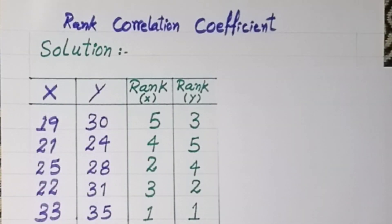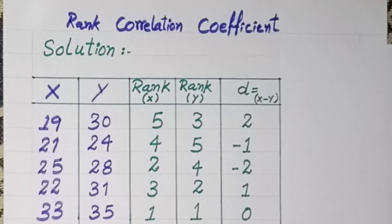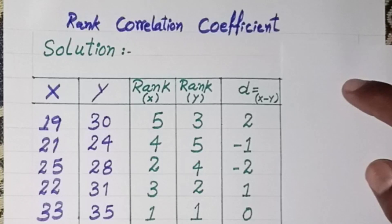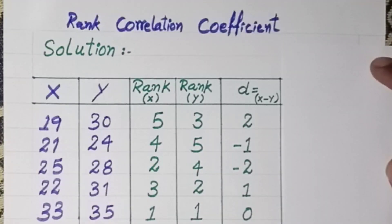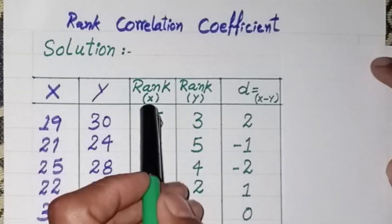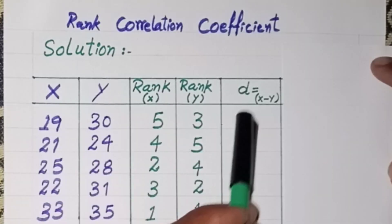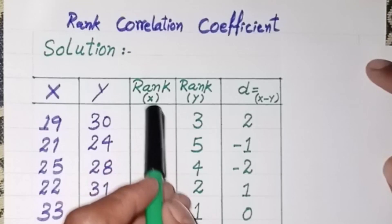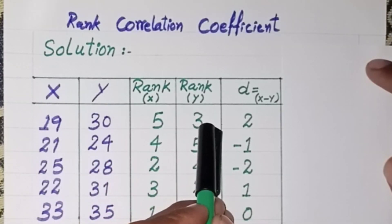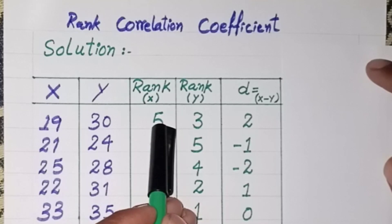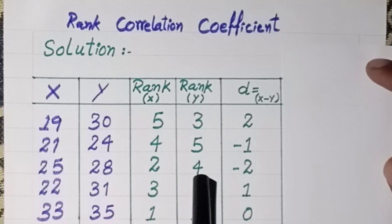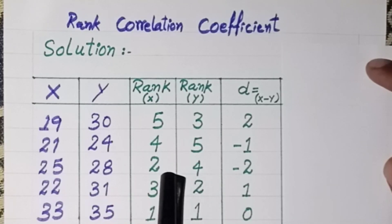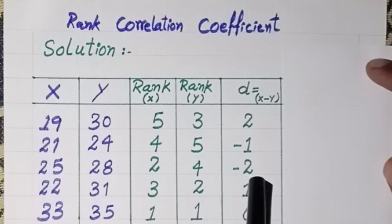After ranking, we calculate the d column, which is the difference between the rank of x and the rank of y for each row. For example, the first rank value of x is 5 and the first rank value of y is 3, so 5 − 3 = 2. In the third row, the rank of x is 2 and the rank of y is 4, so 2 − 4 = −2. In this way we calculate the entire d column.